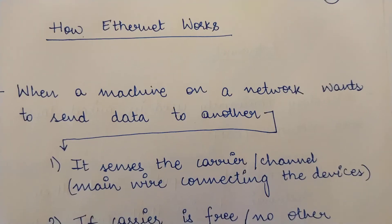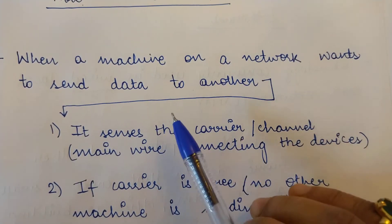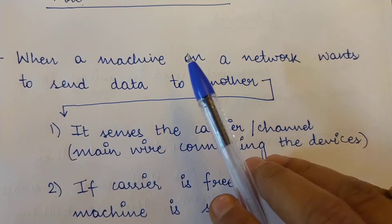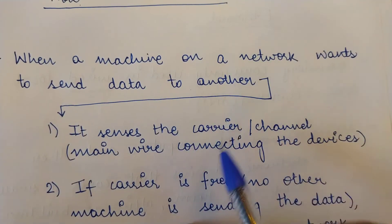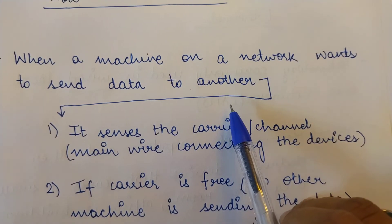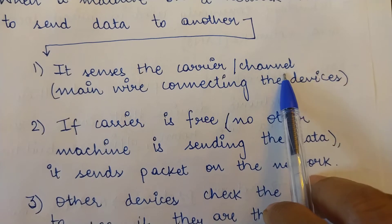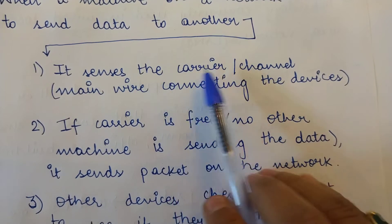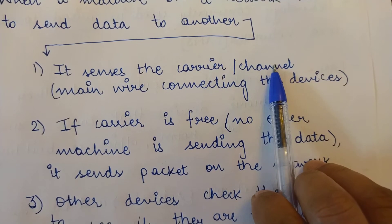The working process behind Ethernet is as follows: whenever a machine on a network wants to send data to another machine, the first thing it does is sense the carrier. The carrier is your communication channel or communication link — it is the main wire connecting the devices. The sending machine first listens to or senses the carrier.